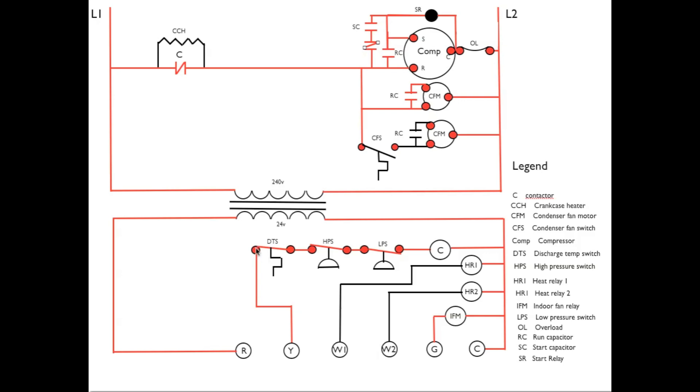Then it goes through normally closed discharge temperature switch, that's that one located on the discharge of the compressor, a high pressure switch, and normally closed, and a normally closed low pressure switch.